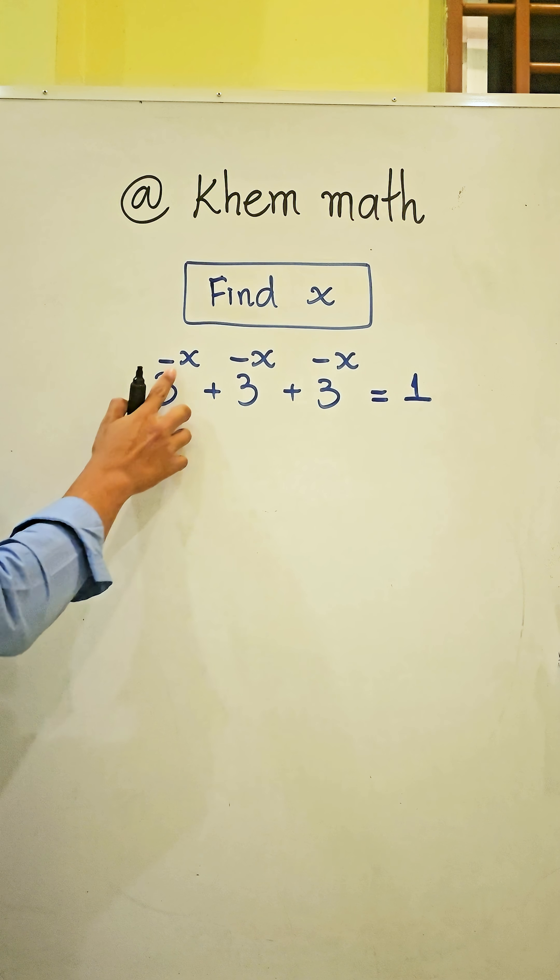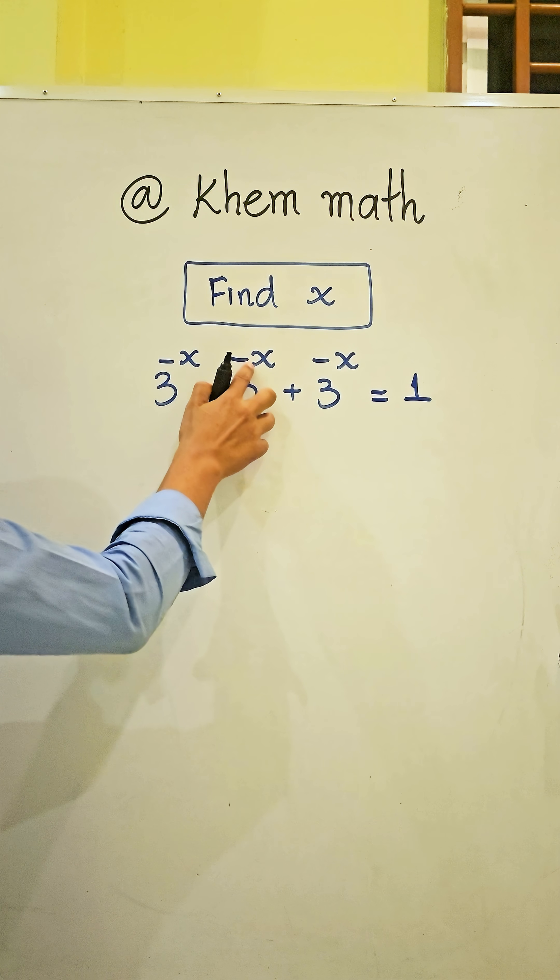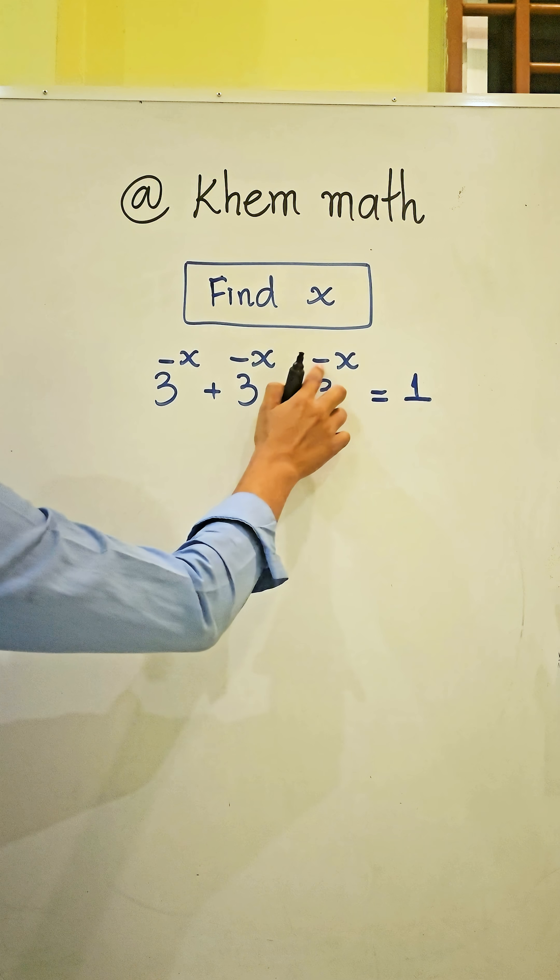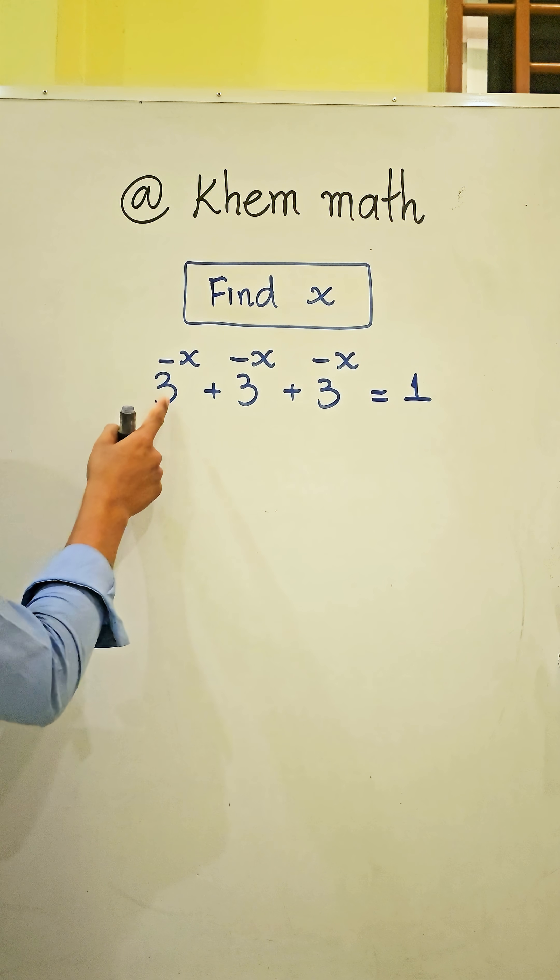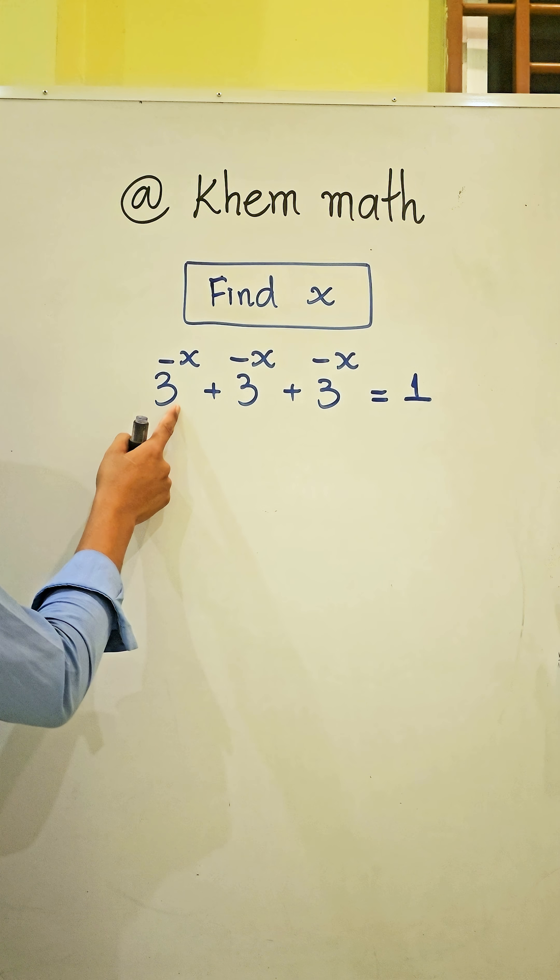Find x: 3 power negative x plus 3 power negative x plus 3 power negative x equals 1. What is the value of x? Okay, here is the exponential equation. The first step, look here, 3 power negative x.